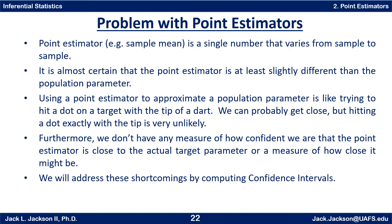It's almost certain that the point estimator is at least slightly different from the population parameter. Using a point estimator to approximate a population parameter is like trying to hit a dot on a target with the tip of a dart — if we're good we can probably get close, but hitting it exactly is very unlikely. Furthermore, we don't have any measure of how confident we are that the point estimator is close to the actual target parameter or how close it might be. We will address these shortcomings by something we call confidence intervals.